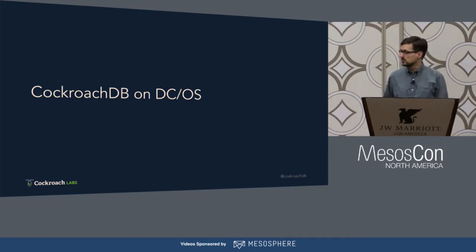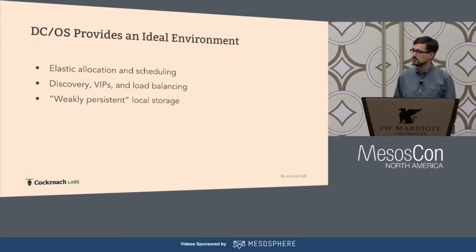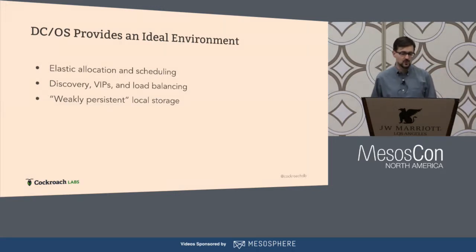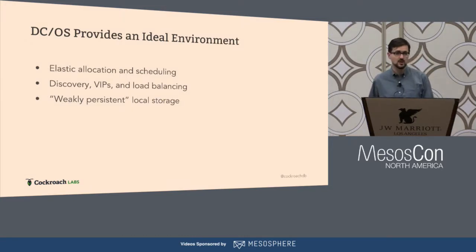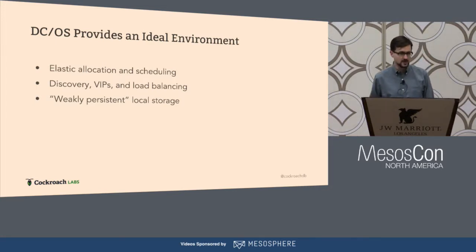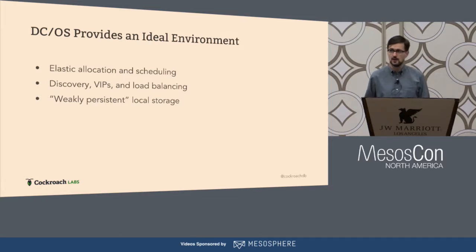A cloud-native database is a good fit for an advanced orchestration platform like DCOS because it provides a lot of functionality that you need to provide this level of service. DCOS, like a lot of container platforms, provides elastic allocation and scheduling — so you can say I need 10 copies of this process and it will find space on your hardware to run that. It provides service discovery, network virtual IP addresses, load balancing, and that sort of thing for managing communication within the database and between the database and your application.